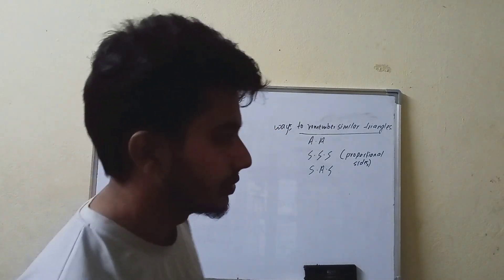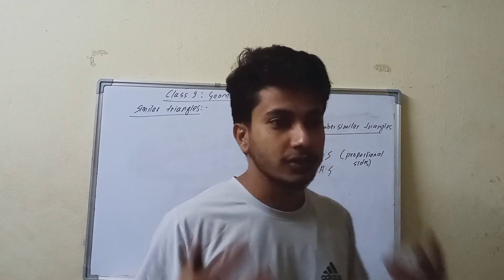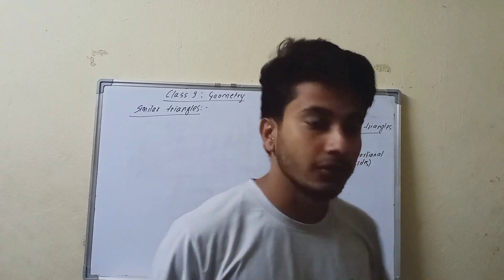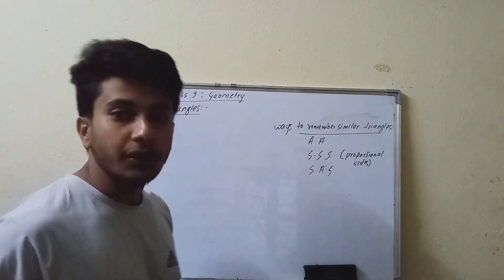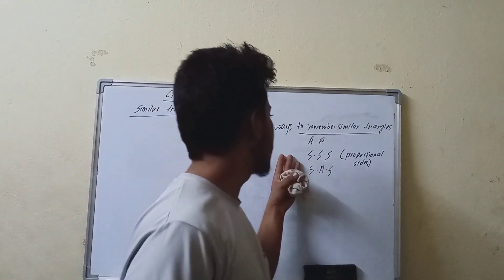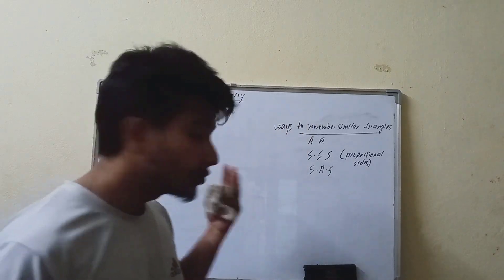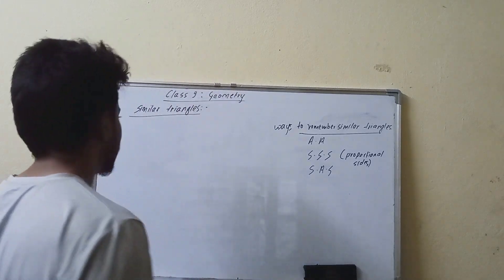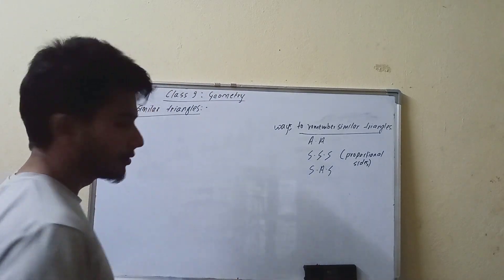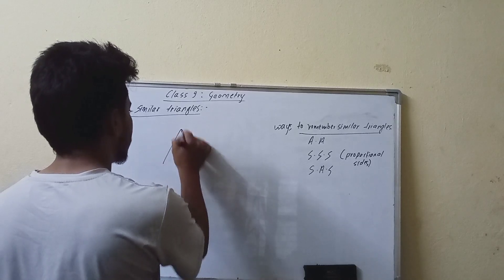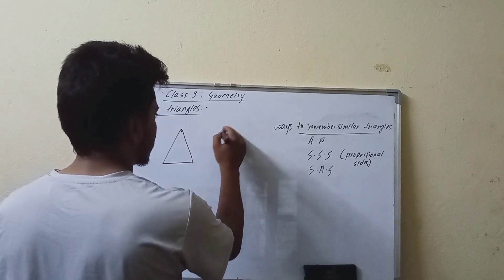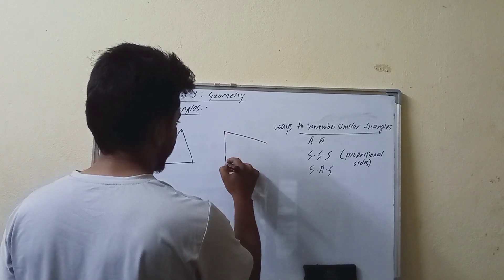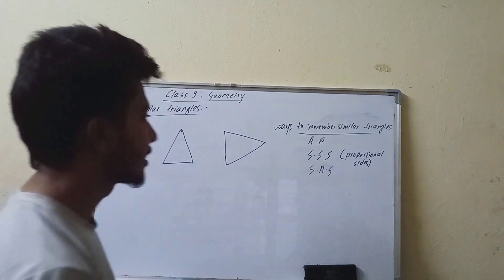A similar triangle is essentially the same shape as another triangle. Two triangles are similar when they share the same angles. The same triangle is similar to another triangle because the angles are the same, and if the two sides are in proportion.